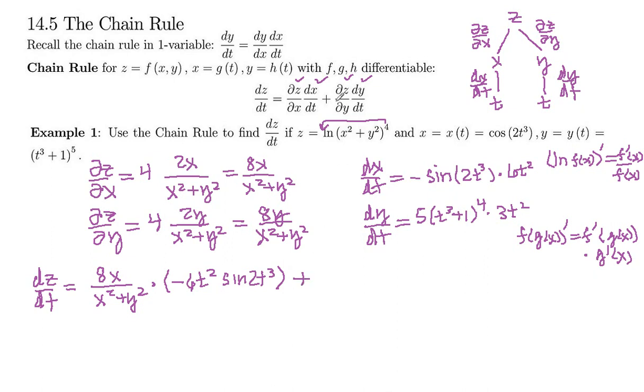And then we need ∂z/∂y, which is right here: 8y/(x² + y²), and then times our dy/dt, which is right here. So let's go ahead and put those guys together out in front. So 5 times 3t² is 15t², and then times (t³ + 1) to the fourth power.